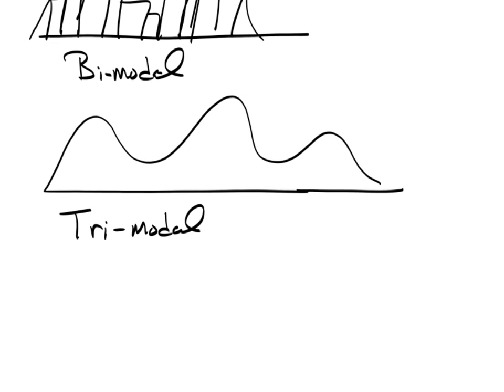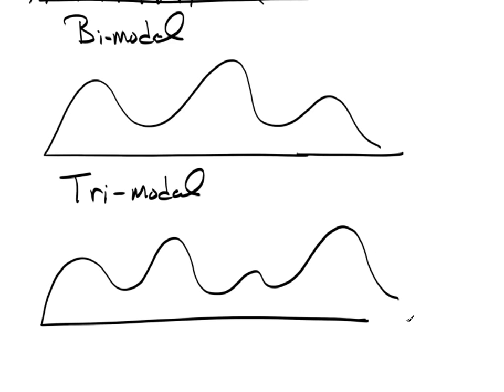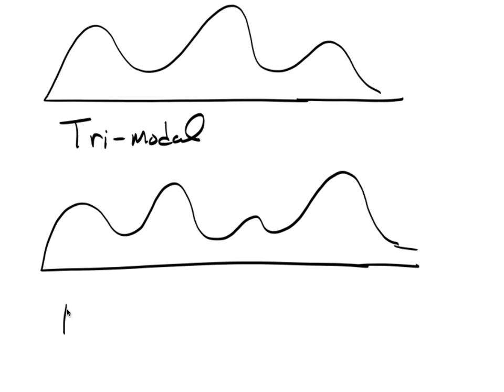And of course we're not going to stop there. However, beyond trimodal, I'm going to draw something here with four obvious peaks. Four obvious peaks and beyond, we typically simply say that is multimodal. And multimodal distribution is actually pretty important because this could be cyclic in some form. There could be some type of temporal component where these are seasons and we're seeing peaks of sales at the peak of different seasons or something to that effect.